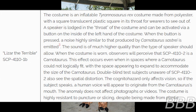Lizard the Terrible — SCP-4110-1-B: The costume is an inflatable Tyrannosaurus Rex costume made from polyester with a translucent plastic square in its throat for the wearer to see out of. A speaker is located in the throat and can be activated via a button on the inside of the left hand. When pressed, a noise highly similar to that produced by SCP-1265-A instances is emitted. When the costume is worn, observers will perceive that SCP-4110-2 is an actual connoisseur saurus, with the space appearing to expand to accommodate the creature's size.